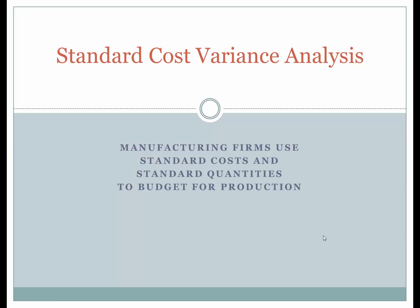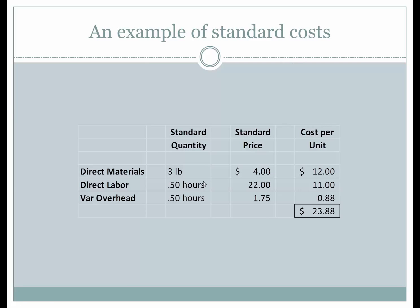Standard Cost Variance Analysis. Manufacturing firms use standard cost and standard quantities to budget for production. This is like a flexible budget, only using standards. They assume that every time they produce something they will use specific standards: the direct materials quantities expected to be used will be three pounds, and they expect it will take a half hour of labor. Variable overhead will be applied based upon labor at the same rate.